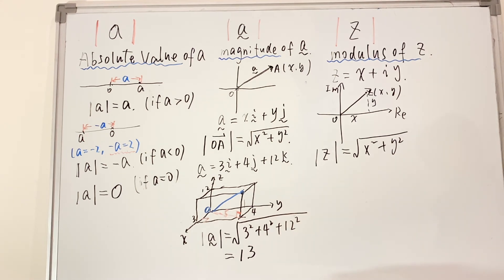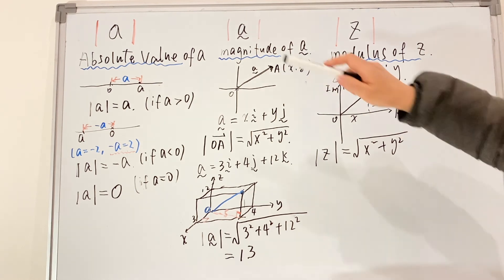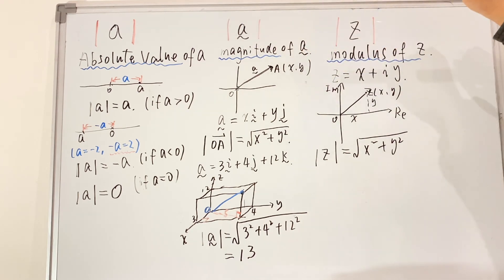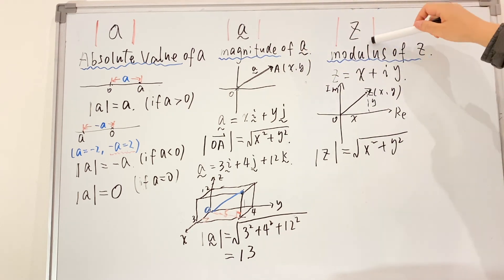So this is the meaning of the two strokes in math: it could be magnitude, modulus, or absolute value depending on context. If you found this video useful, subscribe and leave a like, and let me know what other things you'd like me to explain.